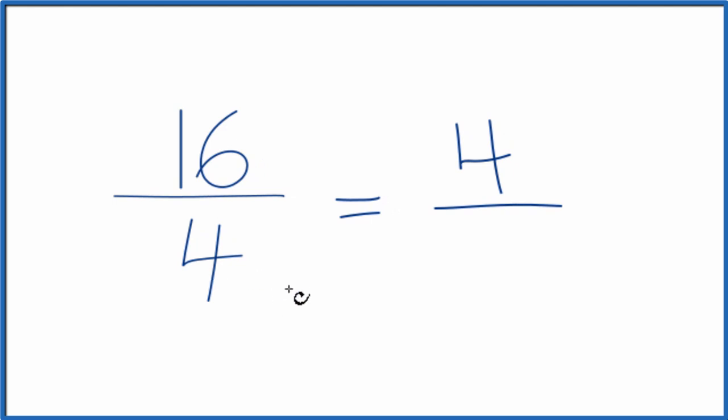And then if we divide 4 by 4, that'll give us 1. So our greatest common factor is 4.